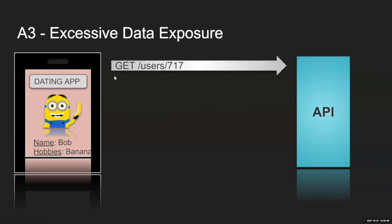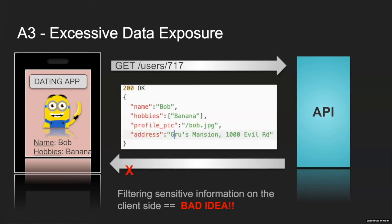But if you look at the API calls behind the scenes, the mobile client sends a call to /users/717 — Bob's ID — and the response contains all the public information plus Bob's home address, which is sensitive. This happens a lot in APIs: back-end developers rely on front-end developers to filter out that information, and they did on the UI, but any attacker with Wireshark or a web proxy can easily see the raw response.